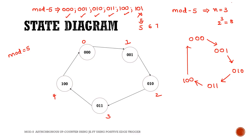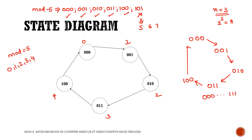If it were not mod 5 and n=3, there would be 8 different states from 000 to 111. But as this is mod 5, it only has 5 states: 0, 1, 2, 3, and 4. After 4 it comes back to 0. This is the state diagram of mod 5.